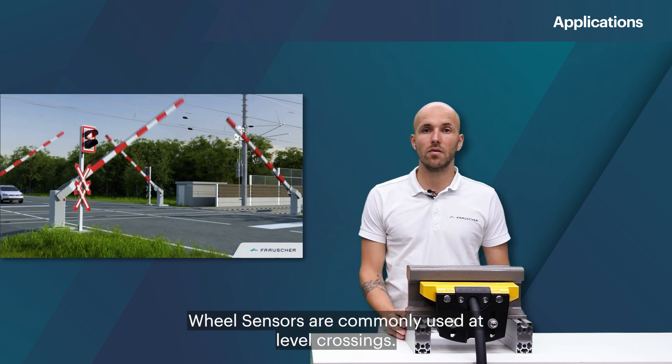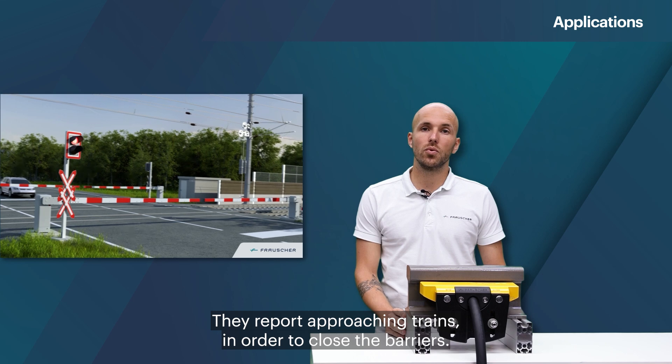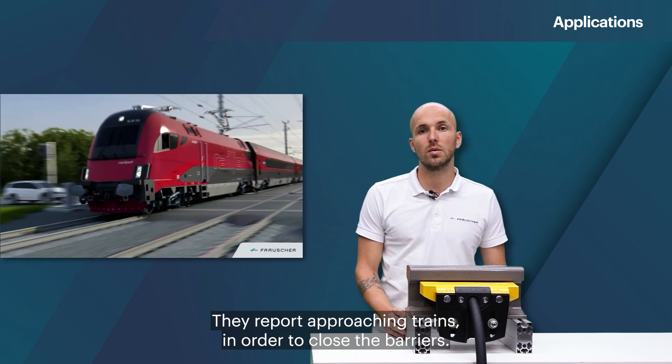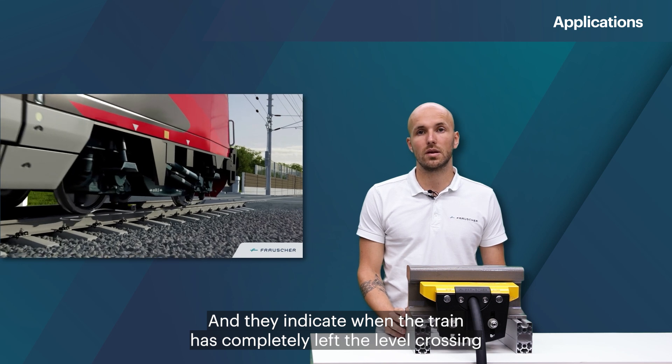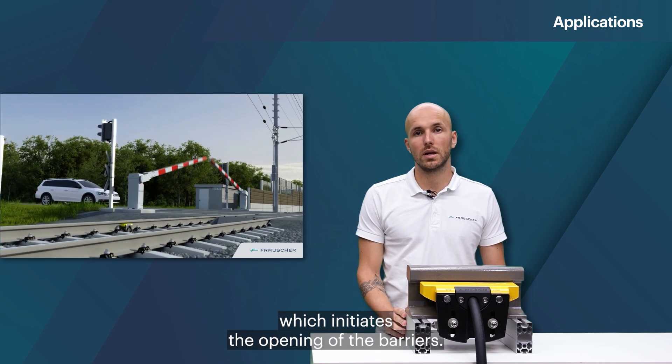Wheel sensors are commonly used at level crossings. They report approaching trains in order to close the barriers and they indicate when the train has completely left the level crossing, which initiates the opening of the barriers.